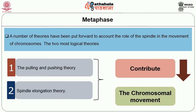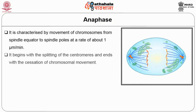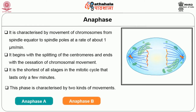Anaphase: chromosomes begin to move towards the opposite poles of the spindle. 'Ana' means back, 'phases' means appearance. Anaphase is characterized by movement of chromosomes from the spindle equator to spindle poles at a rate of about 1 micrometer per minute. It begins with the splitting of the centromeres and ends with the cessation of chromosomal movement — chromosomes separate into two identical groups at opposite poles. It is the shortest stage, lasting only a few minutes, and is characterized by two kinds of movements: anaphase A and anaphase B.